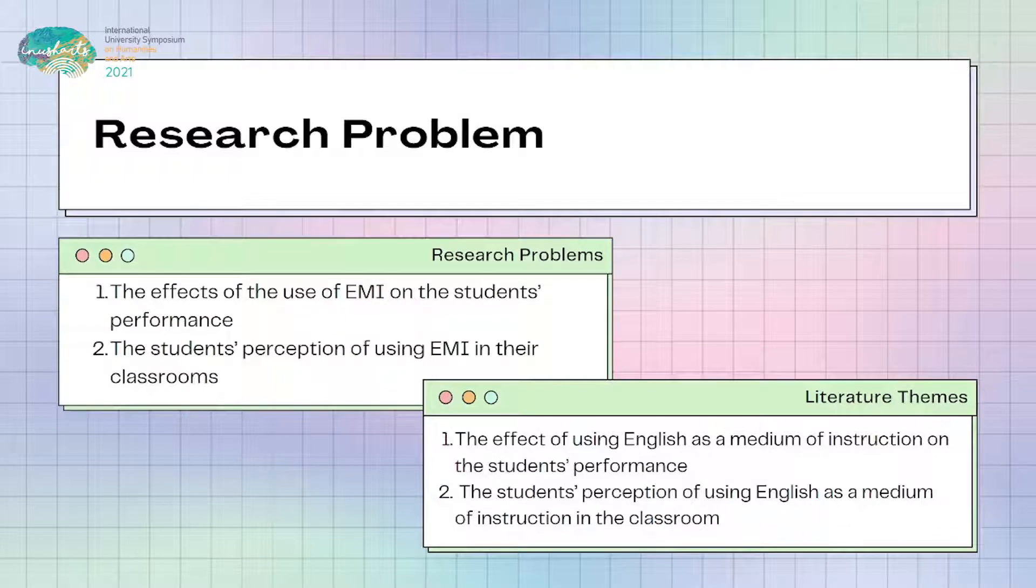There are two literature themes that will be the support for this research. The first theme is the effects of using English as a medium of instruction on the students' performance and the second one is the students' perception of using English as a medium of instruction in the classrooms. These themes can be studied from the phenomenon of EMI which has widely occurred in many countries for the last 10 years.